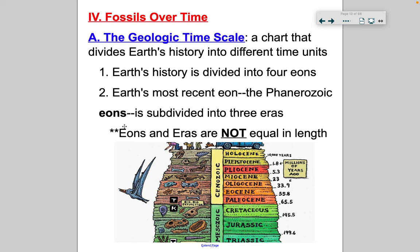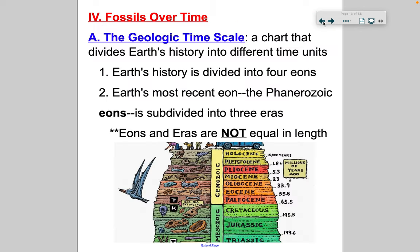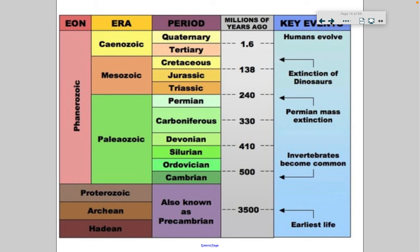The eras are not equal in length — some are larger, some are smaller. From eons it goes into periods. Here are the four eons: the Hadean, the Archean, the Proterozoic, and then the Phanerozoic, which is the one we're in. The Phanerozoic is actually subdivided further — in this diagram you can see it's subdivided into three eras, and even further into periods.